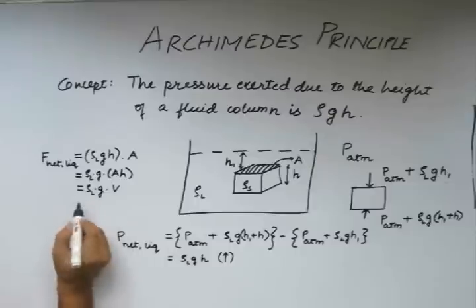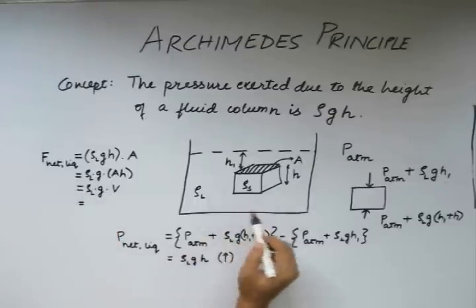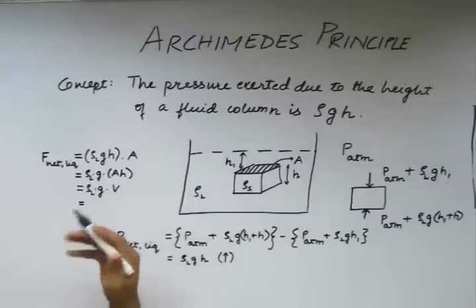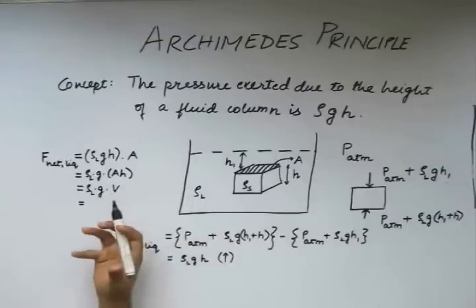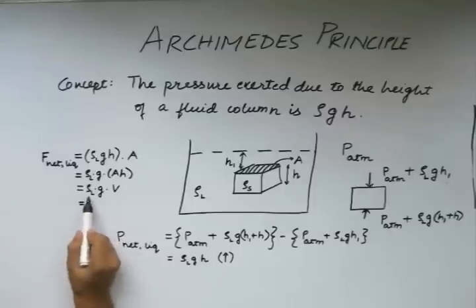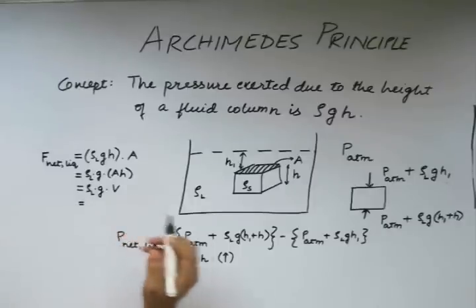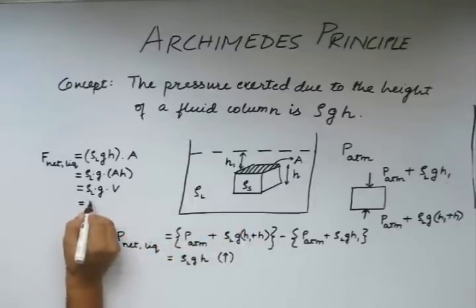This will give us this quantity. If we see, this cross sectional area into the height is basically giving us the volume occupied by this solid body. The rho of the liquid, or the density of the liquid, into the volume of the solid, this will give us a quantity called mass. This mass, because we are considering the density of the liquid, is the mass of the liquid. So let us say we write it as M_L into g.